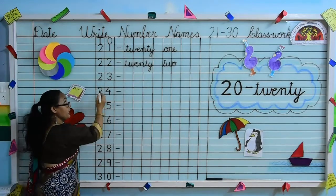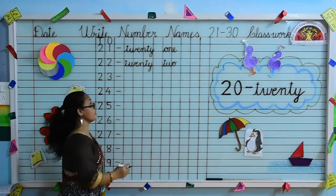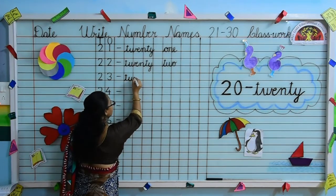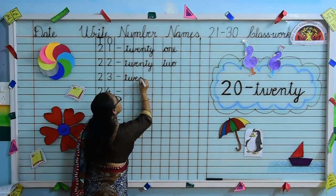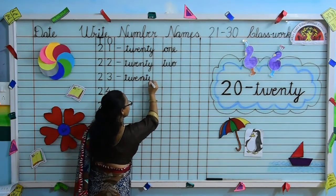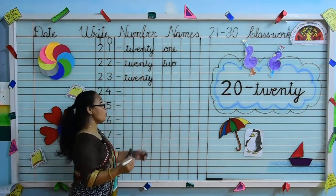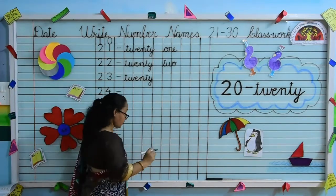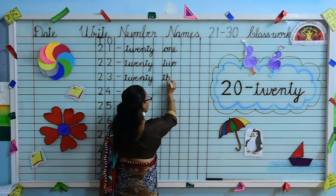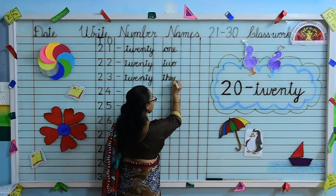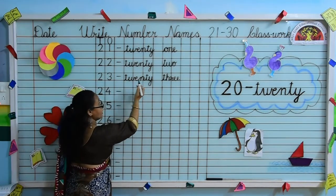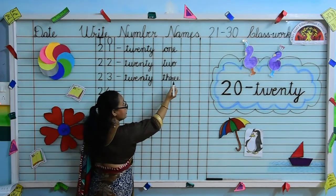Now 2, 3 — 23. What we will write here? Write T-W-E-N-T-Y, 20. Now what we will write here? Yes, the spelling of 3. So kids, we write T-H-R-E-E, 3. T-W-E-N-T-Y, T-H-R-E-E, 3. Kids, write in small cursive letters and in beautiful writing.